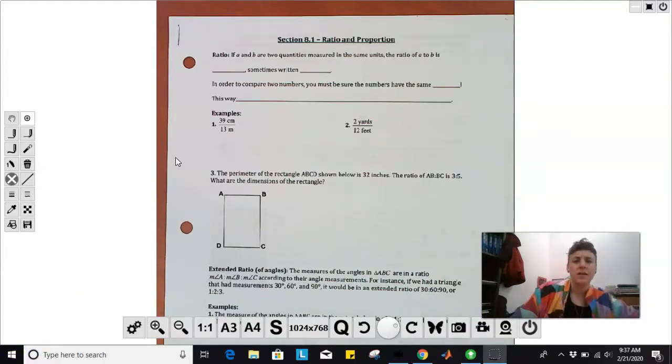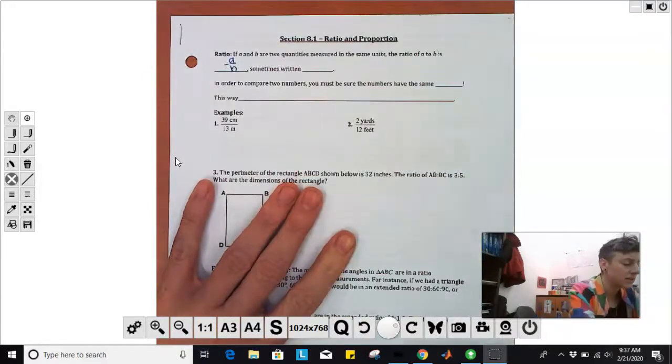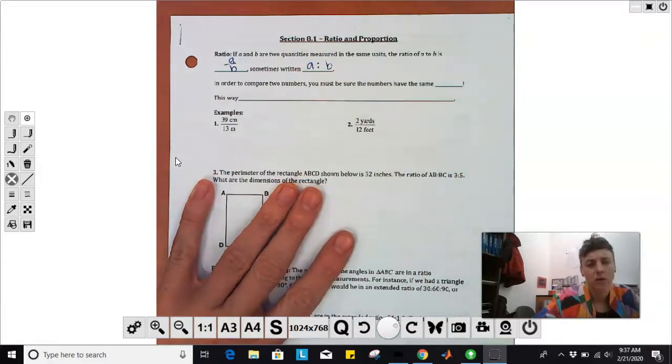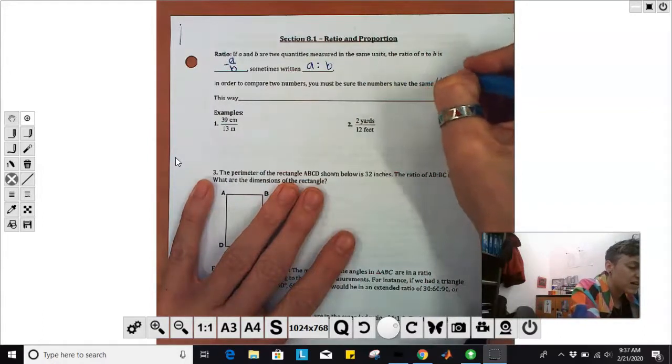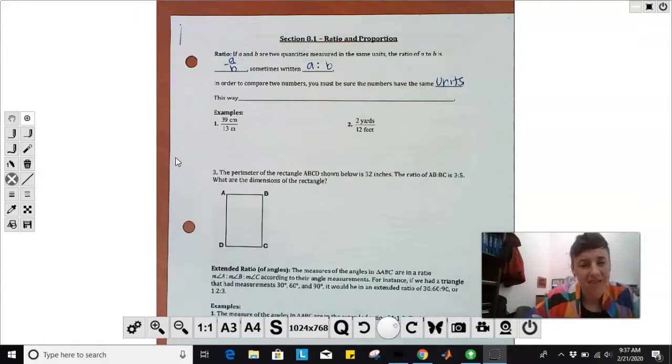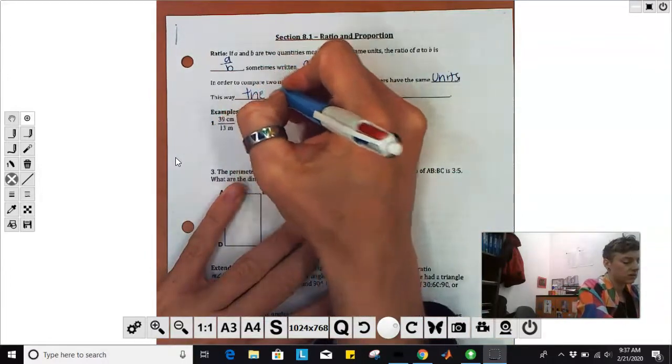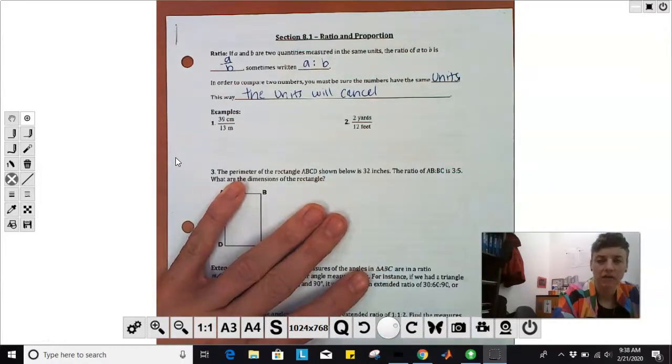What is a ratio? Well, if A and B are two quantities measured in the same units, the ratio of A to B is a fraction, A over B. Sometimes we write it as A colon B in order to compare two numbers. We must make sure the numbers have the same units. This way, those units will cancel and we'll have a ratio of just numbers. The units will cancel and we're really just comparing the two numbers.